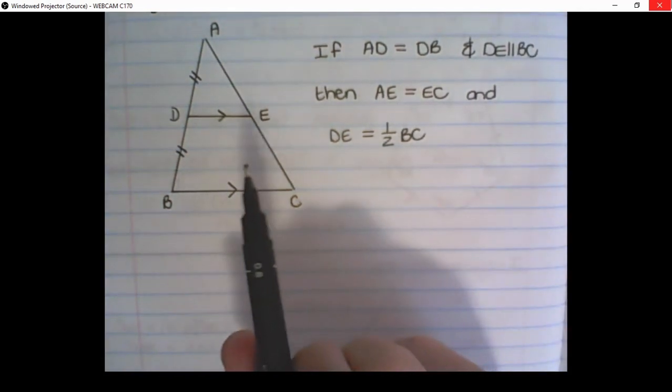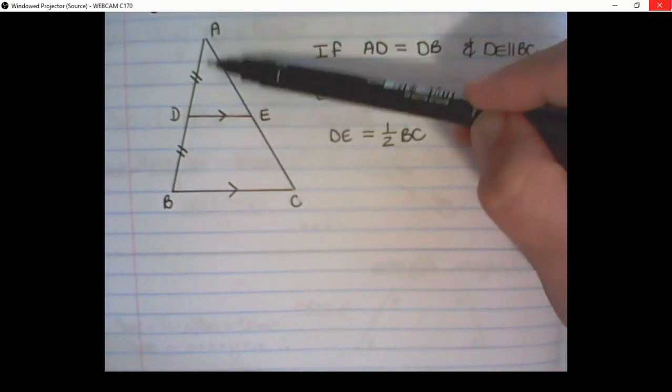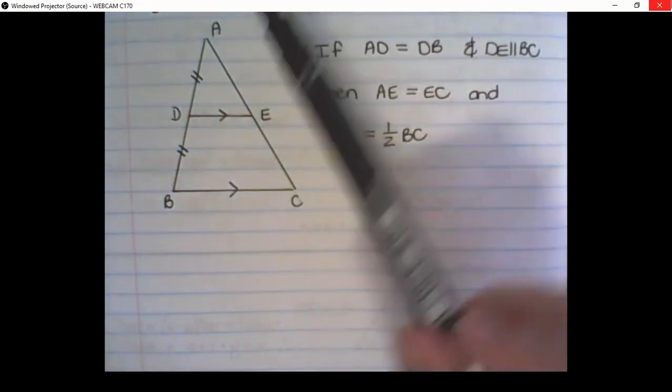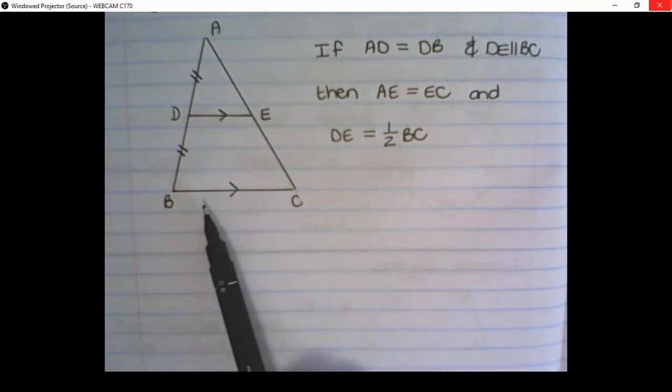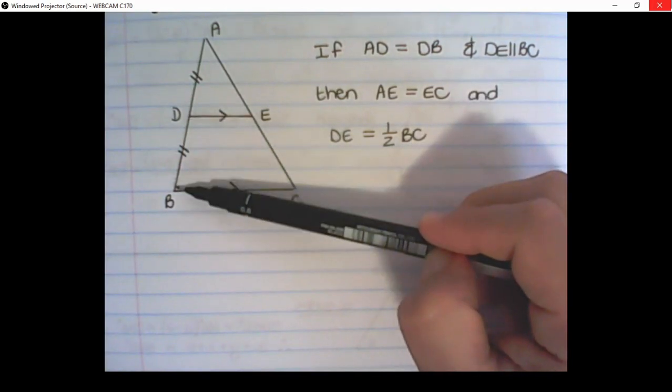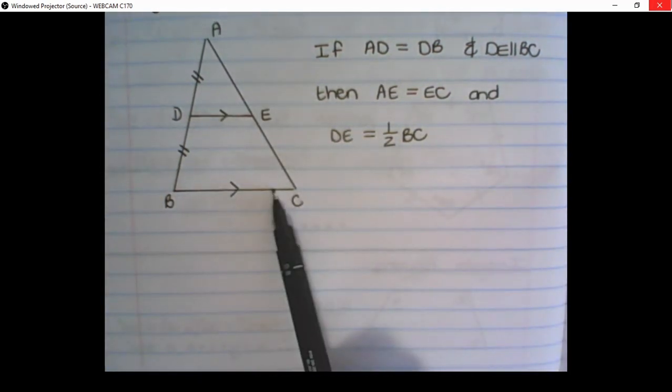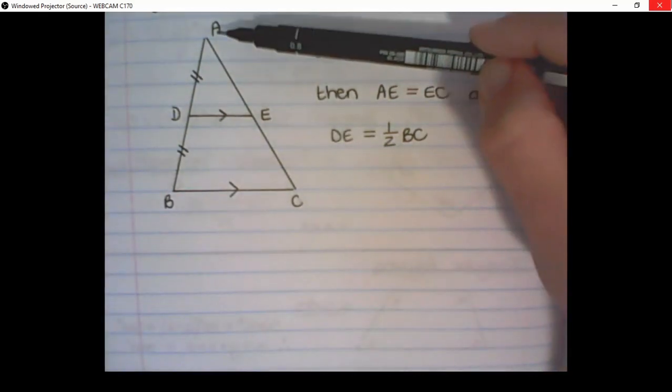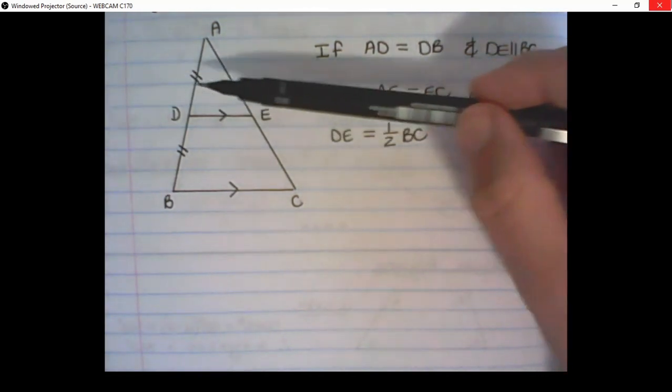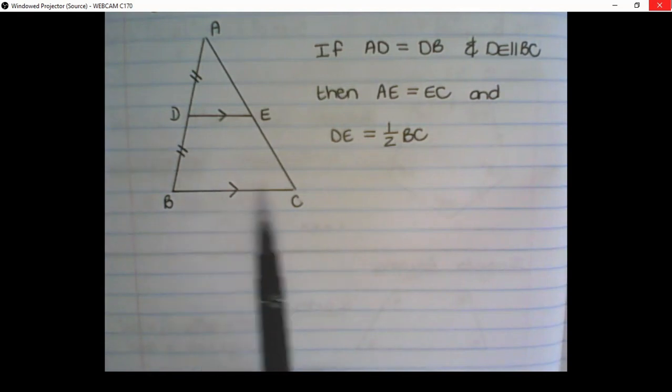In the previous statement, we had this side bisected and that side bisected, and then we know that this will be parallel. But now we have one side cut in half and another pair of lines parallel, therefore this line AE is equal to EC, and DE is half of the length of BC.